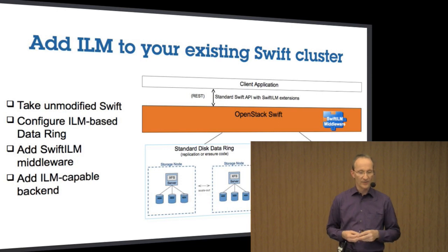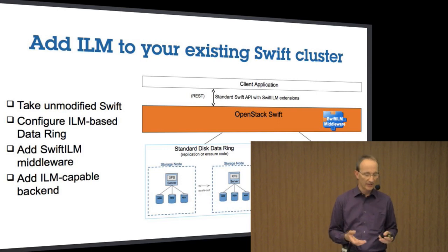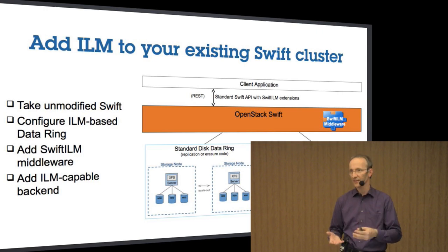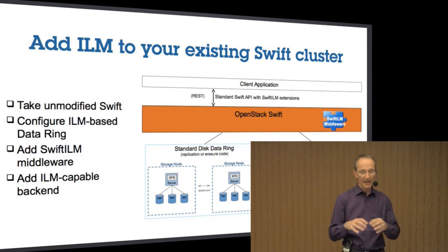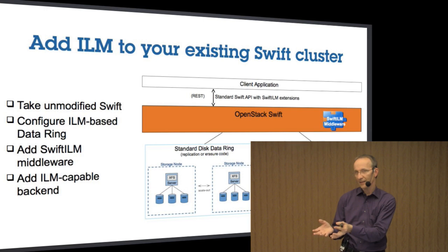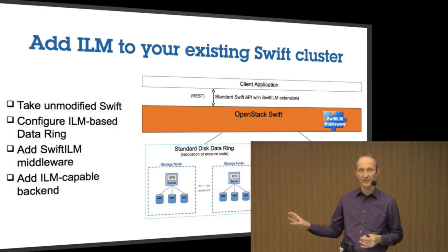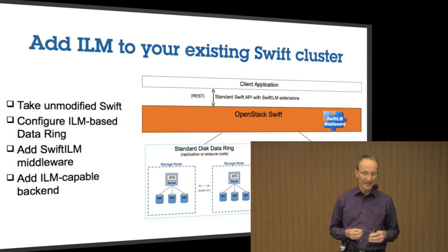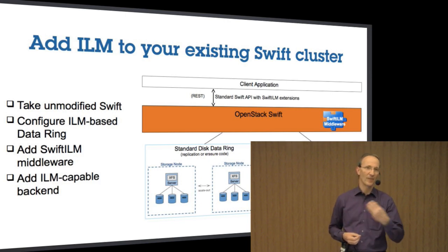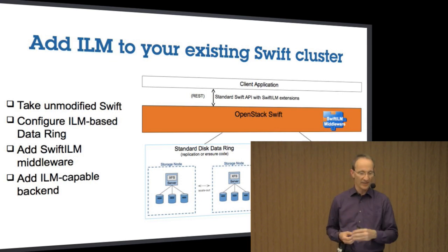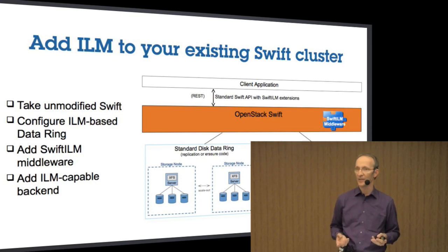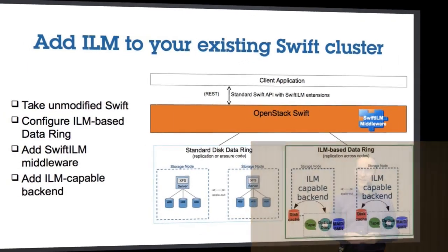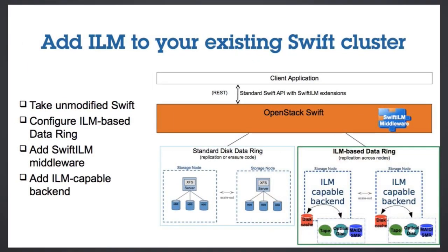If you now look at your Swift cluster, the way you would introduce such functionality would be to take your unmodified Swift cluster, add a dedicated data ring for your ILM operations — shown in the lower right of the picture — and then add this ILM-capable backend from IBM, BDT, or your own implementation, and add the Swift ILM middleware, and you're all set to do the operations.